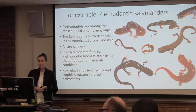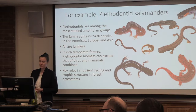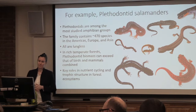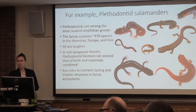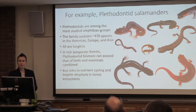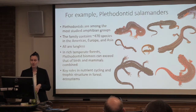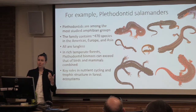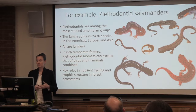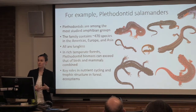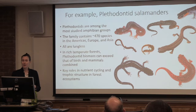In rich temperate forests like what we have here in the Southern Appalachian Mountains, Plethodon biomass can exceed that of birds and mammals combined on a per square meter basis, which is pretty significant. As a result of this high abundance and density, they play key roles in nutrient cycling and trophic structure in forest ecosystems. So they actually do matter even though they're so little.